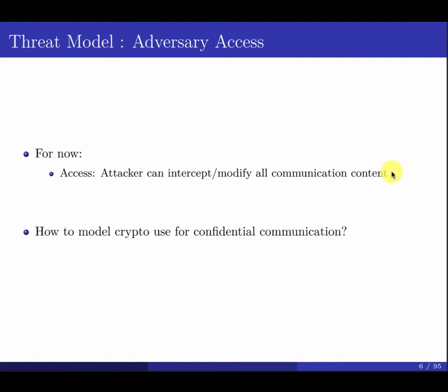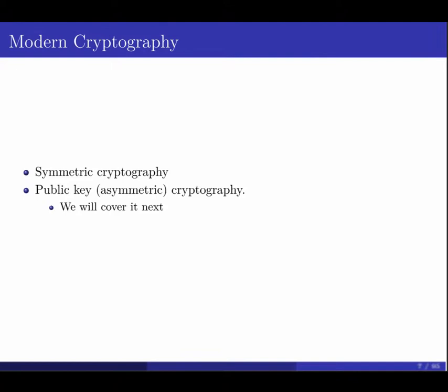The second part of the adversary model: what can the bad guy access and do? We assume the attacker can intercept, create, and modify messages. Based on what the attacker knows and can do, we need to think about how to design the cryptosystem to achieve confidential communication — to prevent interception, modification, or injection of messages.